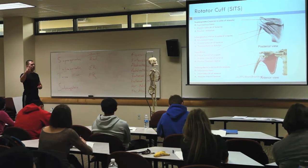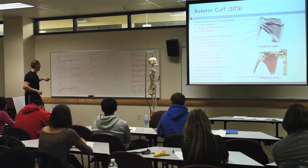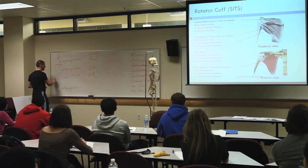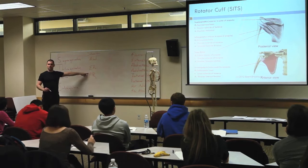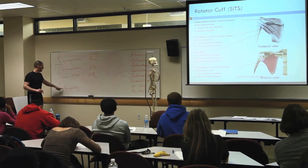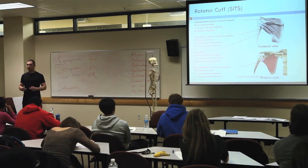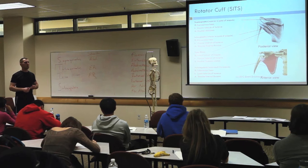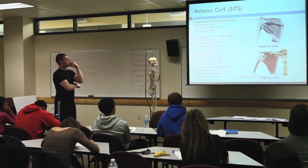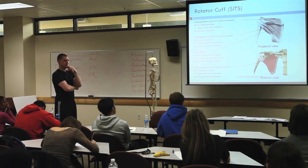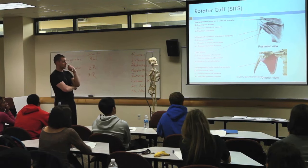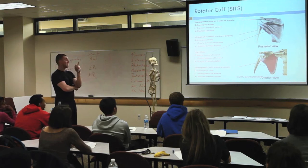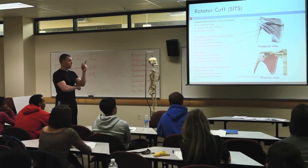If you remember your rotator cuff is your SITS muscles, it externally rotates - which only leaves one muscle: subscapularis. What does 'sub' mean? Below. What's different about the picture showing the subscapularis? It's an anterior view, which means the ribs have been removed from that picture. You are looking at the subscapularis from the front.